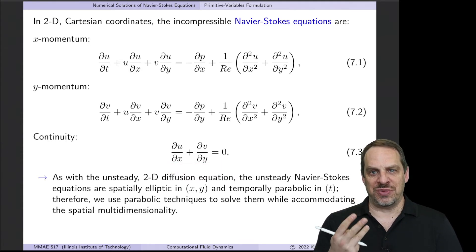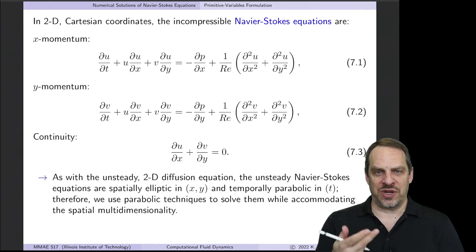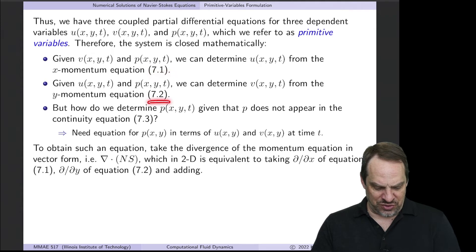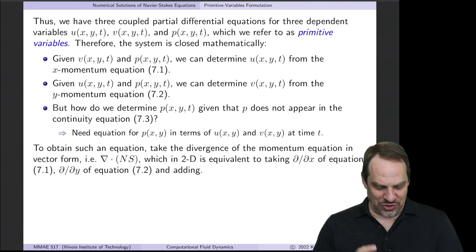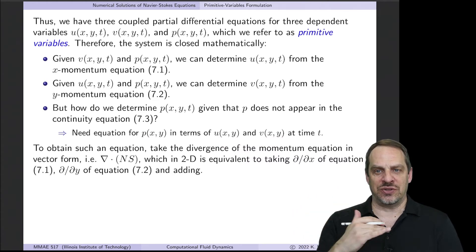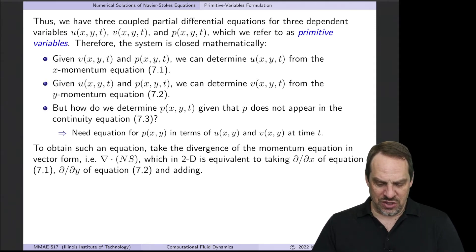We do have a closed system mathematically — three equations for three unknowns — but we don't have an equation we could solve directly for pressure. So we have our primitive variables u, v, and p: equation 7.1 is for u, 7.2 is for v, and 7.3 is not for pressure. We need an equation for pressure in terms of u and v, so that if we know u and v from the other two equations, we can solve for the pressure. We need to replace the continuity equation with an equation for pressure that we can solve.